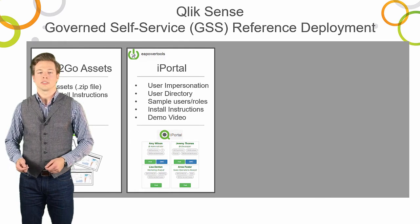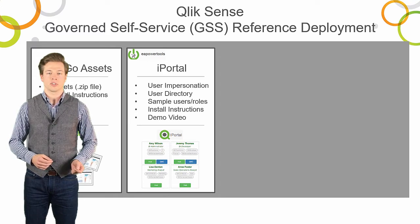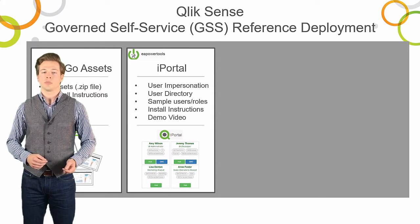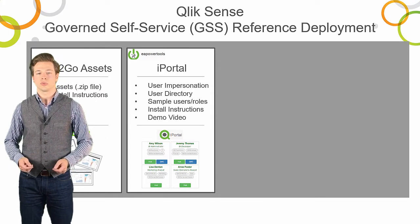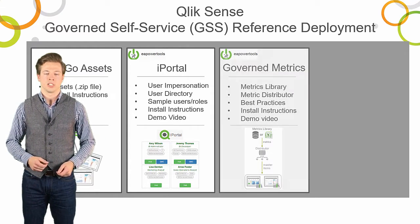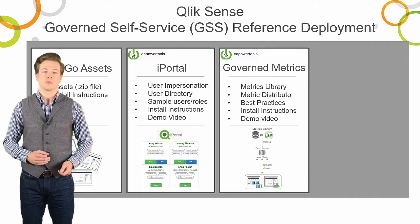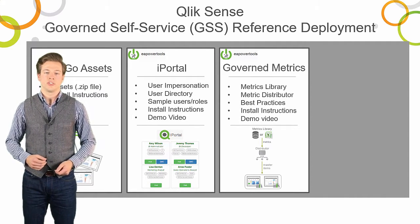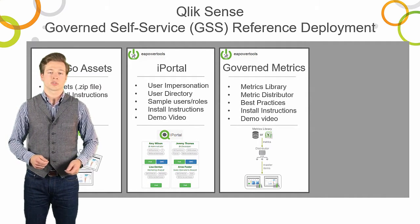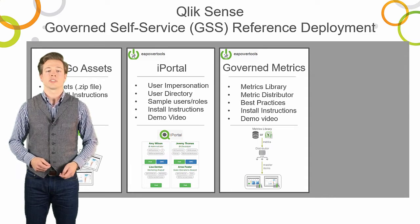The iPortal lets you see the impact of these guardrails as defined by the security rules and user attributes. The third component is the Governed Metrics Service. GMS is a subscription service delivering centralized metrics to master libraries.